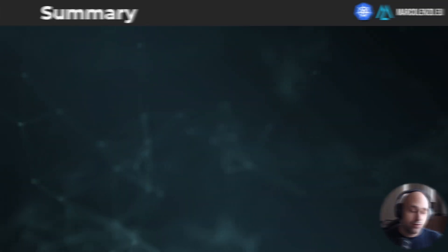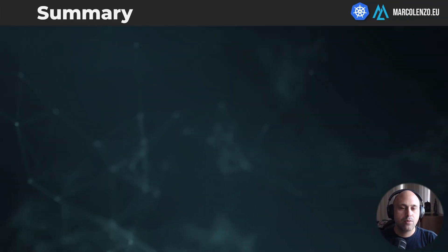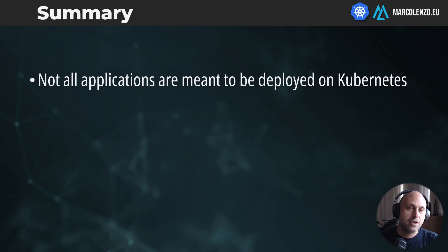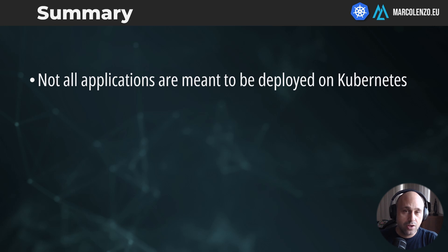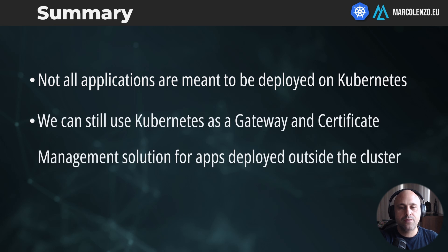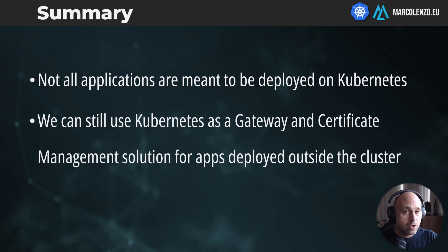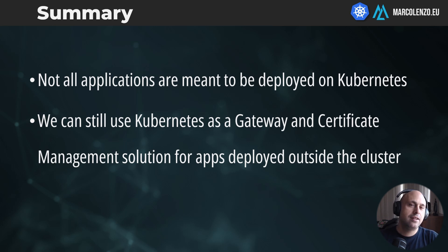That's all for today. To sum up, we learned that not all applications are meant to run within a Kubernetes cluster. In those scenarios, it's possible to route traffic from an ingress or service to an application outside the cluster — and by doing that, we can leverage Kubernetes as an API gateway and certificate management solution.